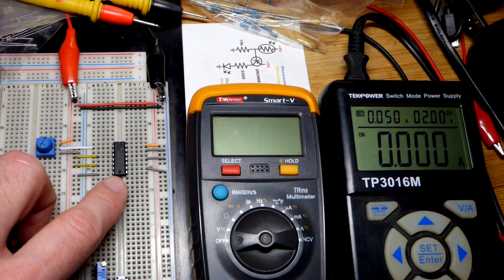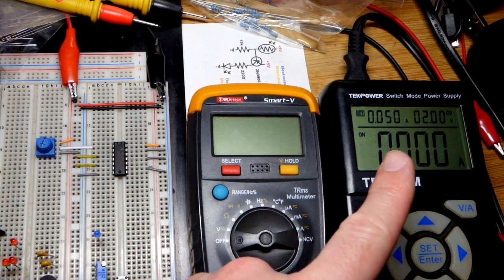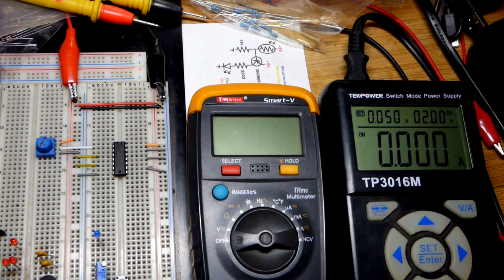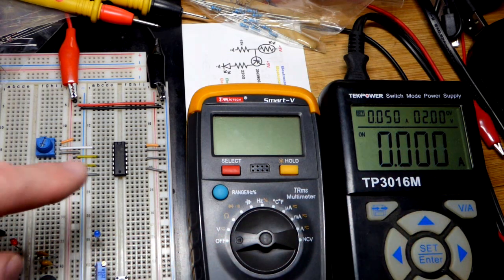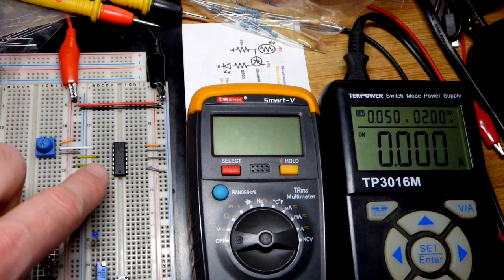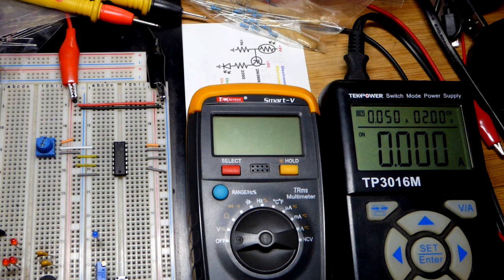But when you look at the datasheet, you'll see that it has a recommended voltage range of down to 2 volts, and I think it goes up to 6 volts. Normally they're used in 5 volt circuits, but in this video we're going to see if we can actually get an output that goes high and low in that 2 volt range.